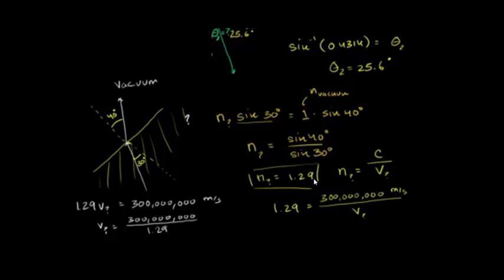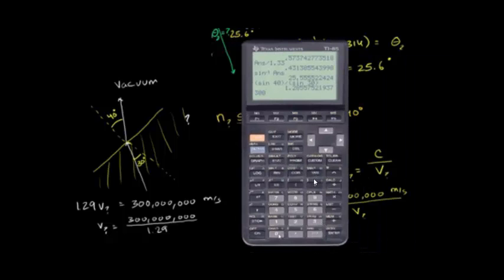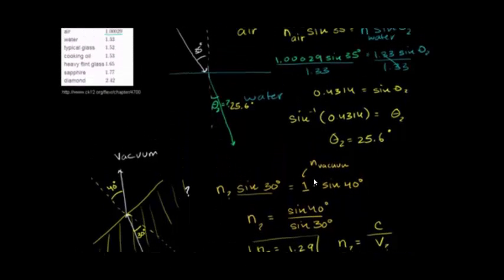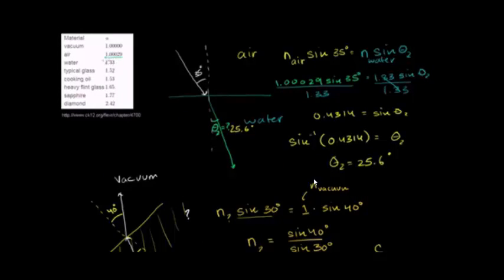Let's figure out the velocity. 300 million divided by 1.29 gives approximately 232 million meters per second. So in this material light travels at about 232 million meters per second. If we had to guess what this material is — the refraction index is close to 1.29, which is close to water (1.33). Maybe it's some type of interface with water in a vacuum, or perhaps some other solid material.